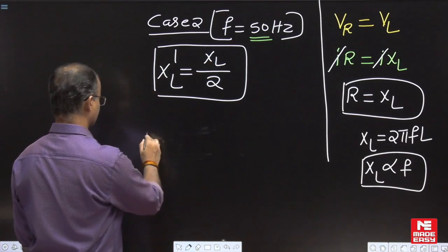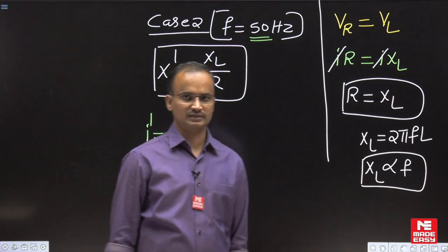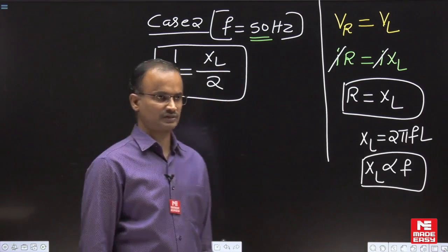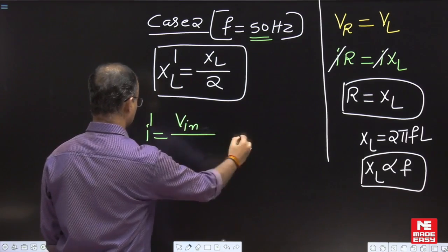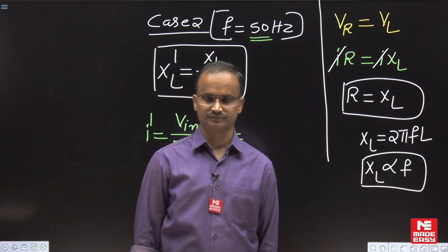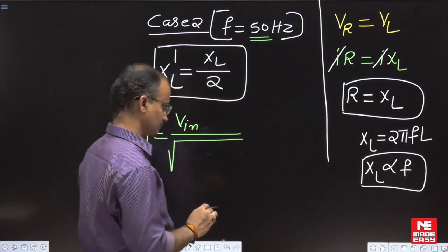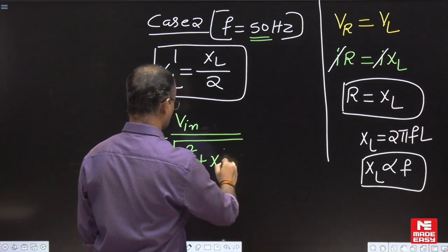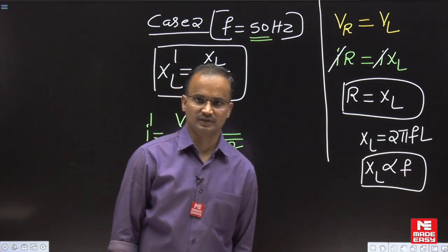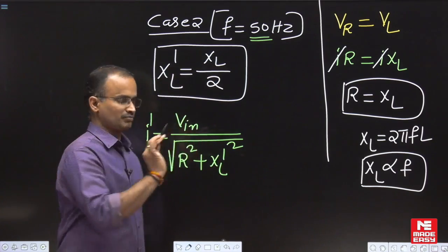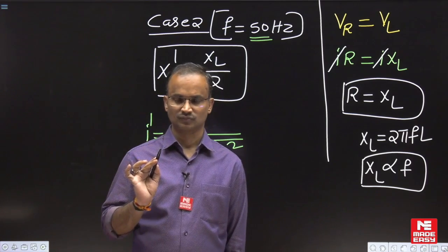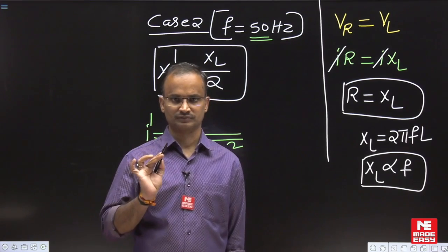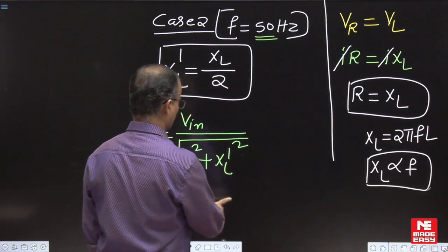Now first let us find out the current. Whenever the inductive reactance changes, the impedance in the network also changes, and thereby the current in the network also changes. The new current I' equals input voltage divided by the corresponding impedance: Vin / √(R² + XL'²). Note that we are only modifying the frequency — the input voltage magnitude remains the same.